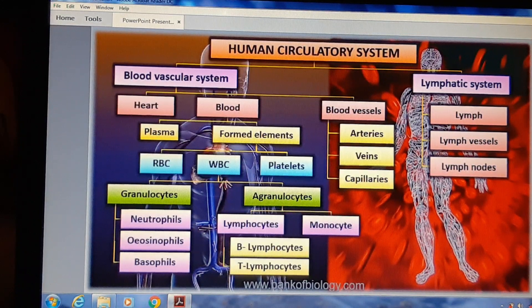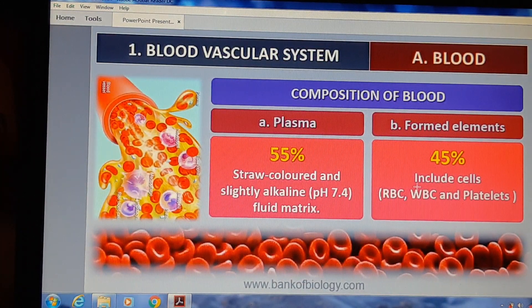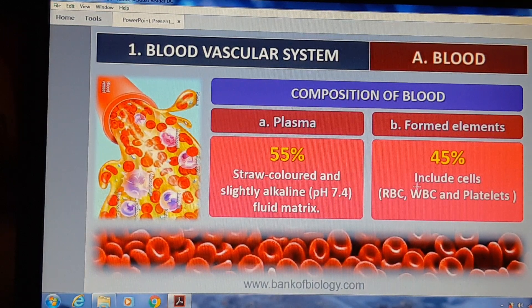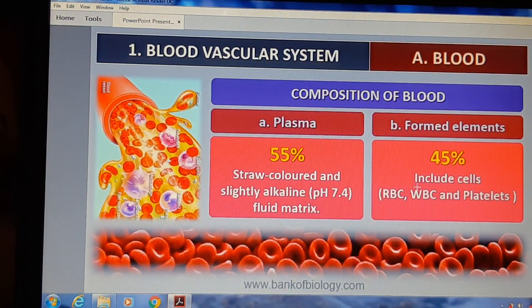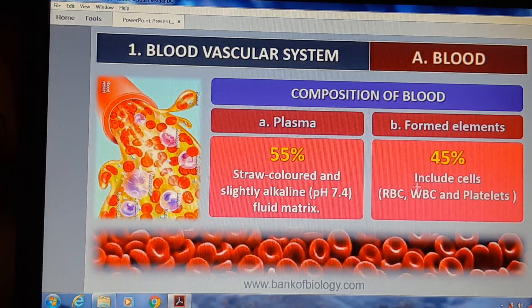तो इस system के बारे में हम आज जानेंगे। Blood is a connective tissue। Blood में 55% plasma होता है, जो straw color, slightly alkaline होती है, और जिसका pH 7.4 होता है। 45% में formed elements होते हैं, जो include करते हैं RBC, WBC, और platelets। यह blood का major composition है — एक plasma और दूसरा formed elements।